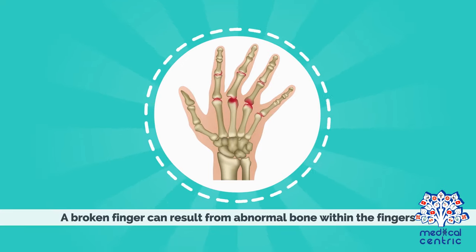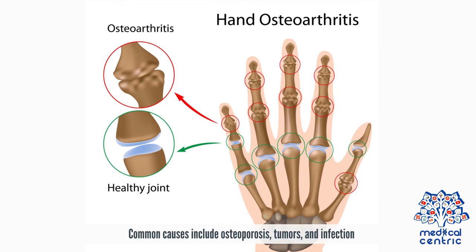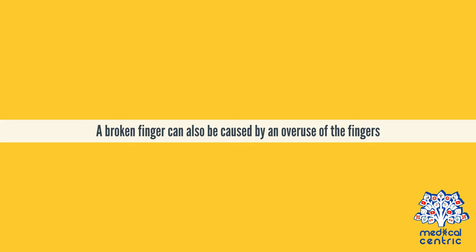A broken finger can also result from abnormal bone within the fingers. This type of fracture is referred to as a pathologic fracture, and it results from having a condition that causes weakening of the bone, leading to susceptibility to fracture. Common causes include osteoporosis, tumors, and infection. A broken finger can also be caused by an overuse of the fingers.